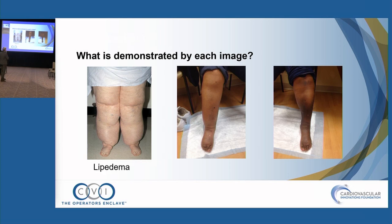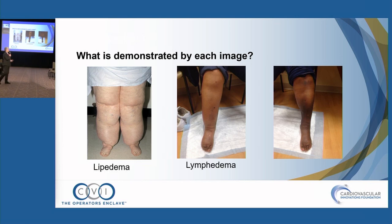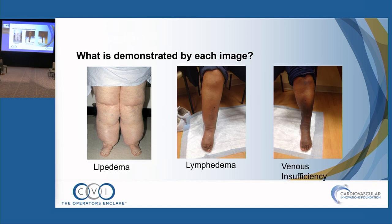The first picture is actually lipedema. The second is the more classic lymphedema. And the third — which we all see a lot of — is venous insufficiency. So how do we differentiate these?